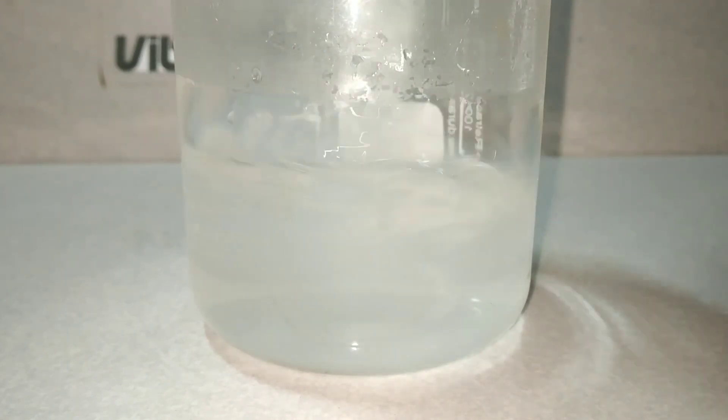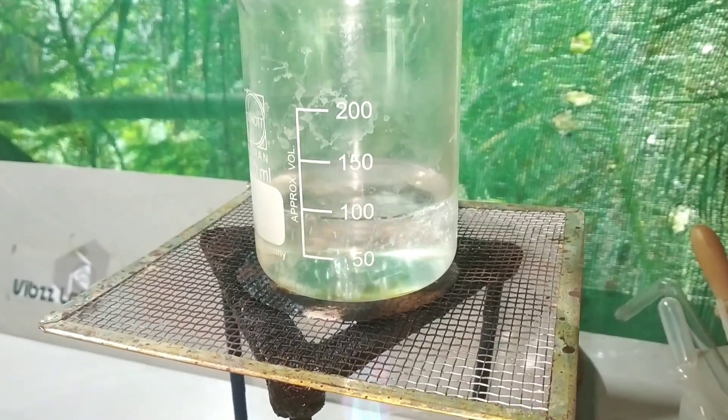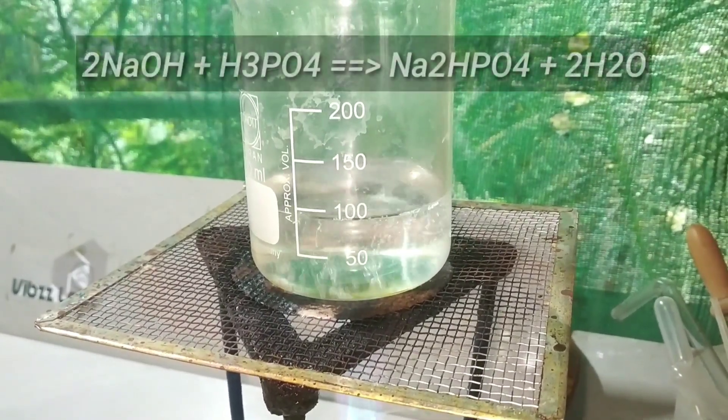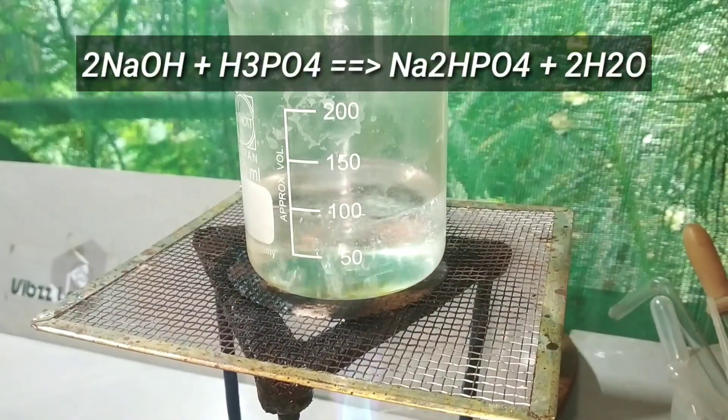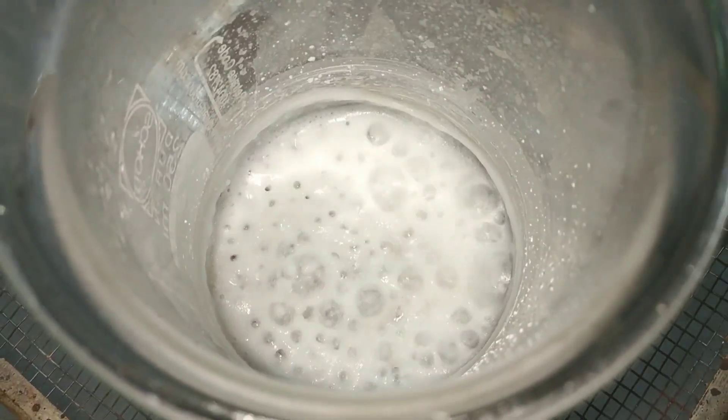What is happening here is two moles of sodium hydroxide reacts with orthophosphoric acid, forming disodium hydrogen phosphate and two molecules of water.